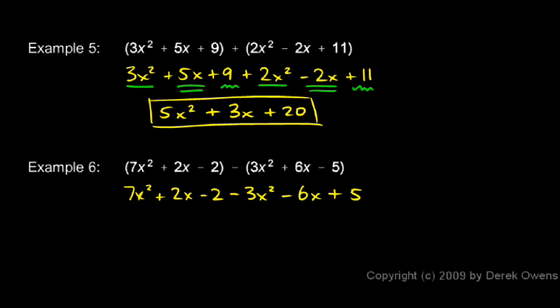Now we'll go through and combine like terms. We have 7x² and -3x². Those combine to give us 4x². We have 2x and -6x. Those combine to give us -4x.